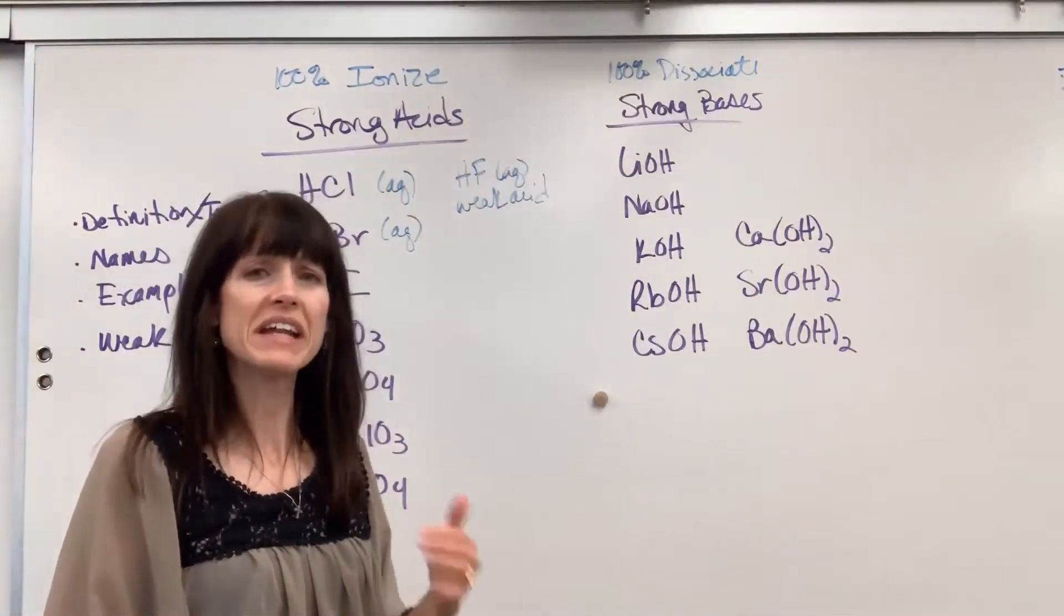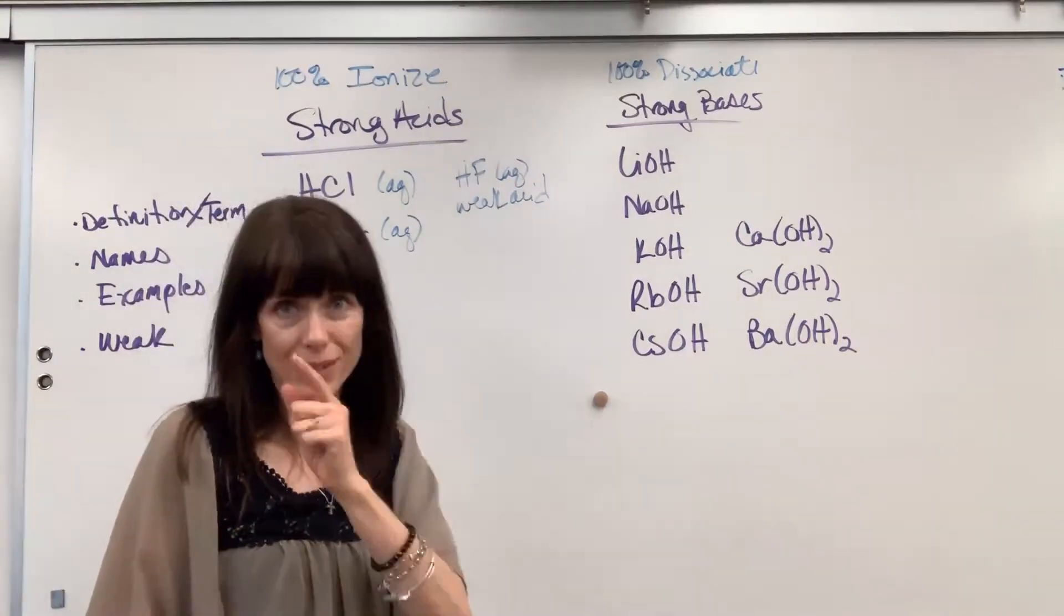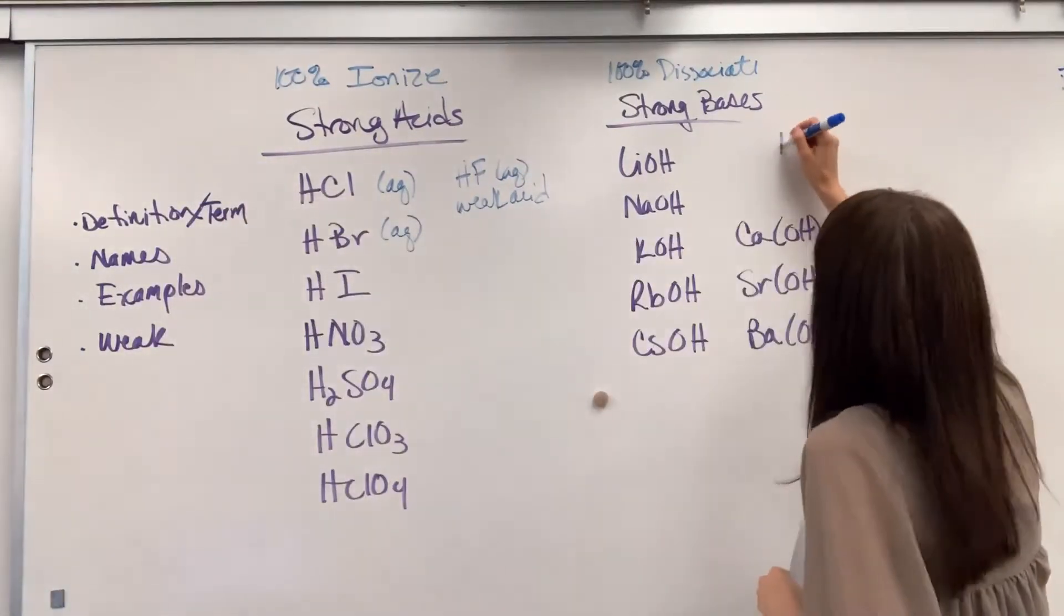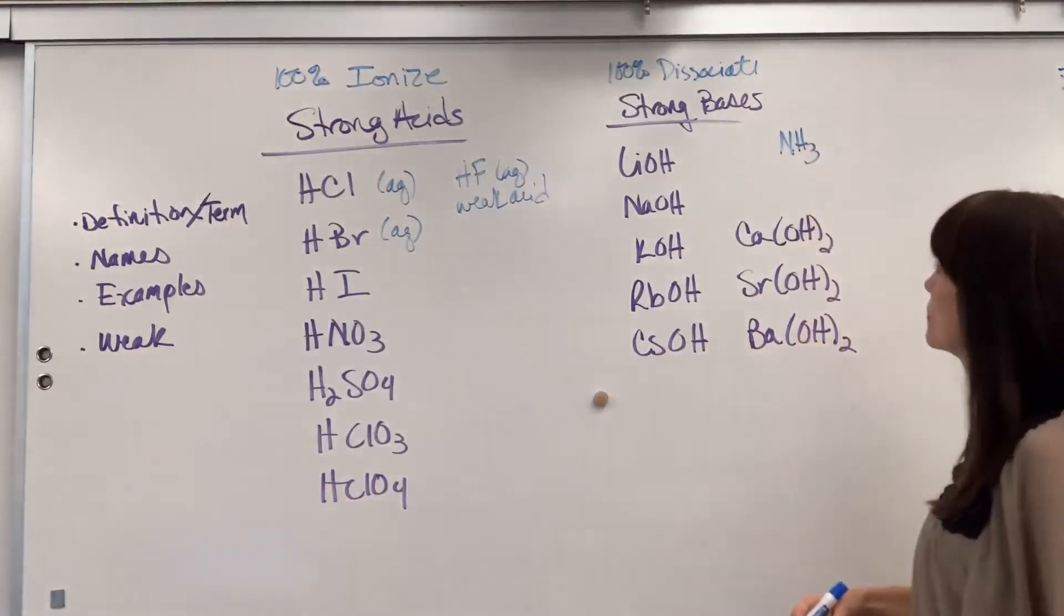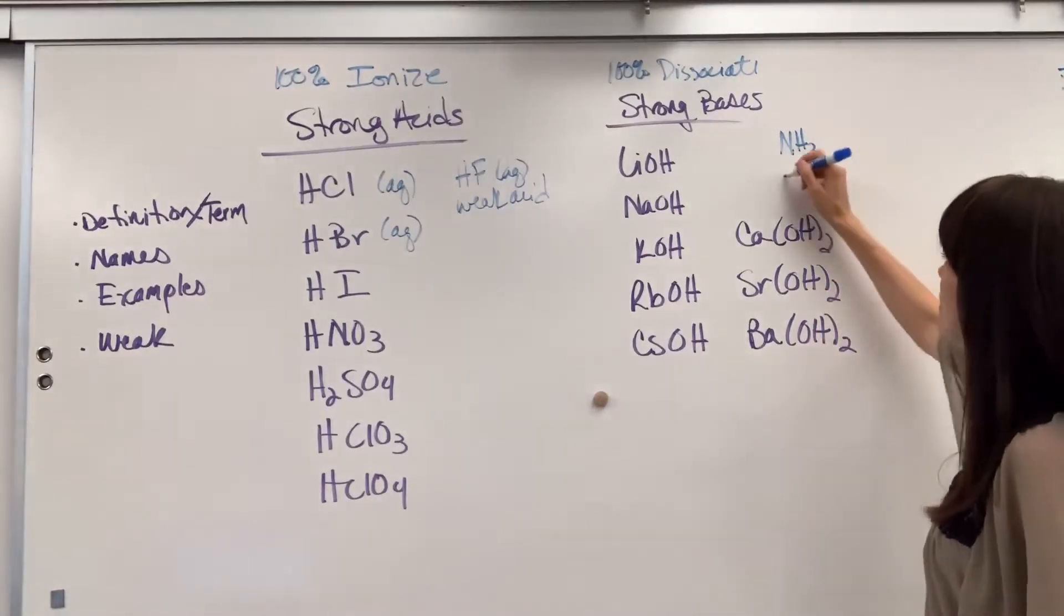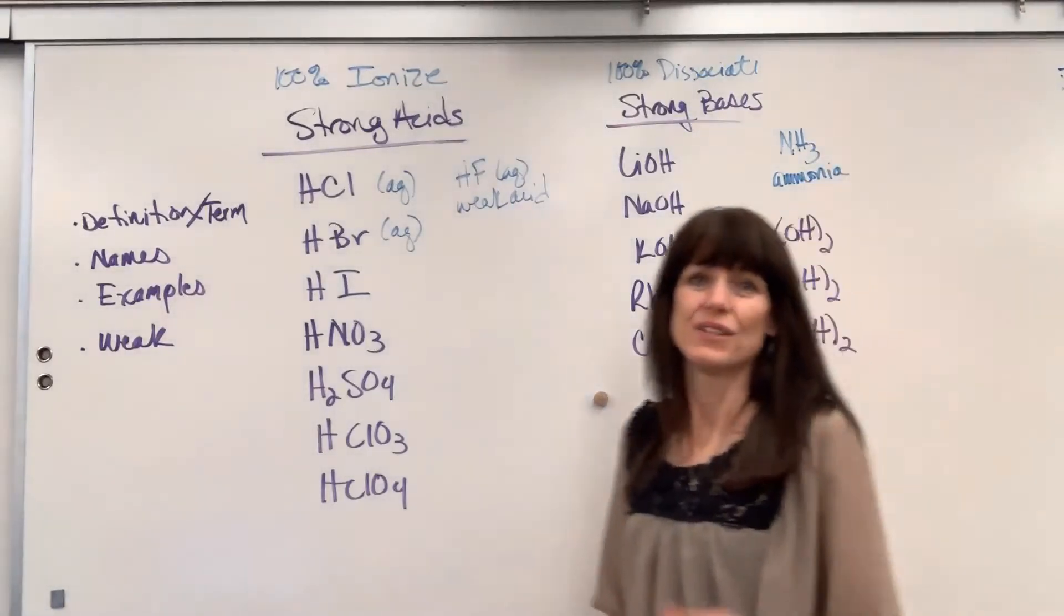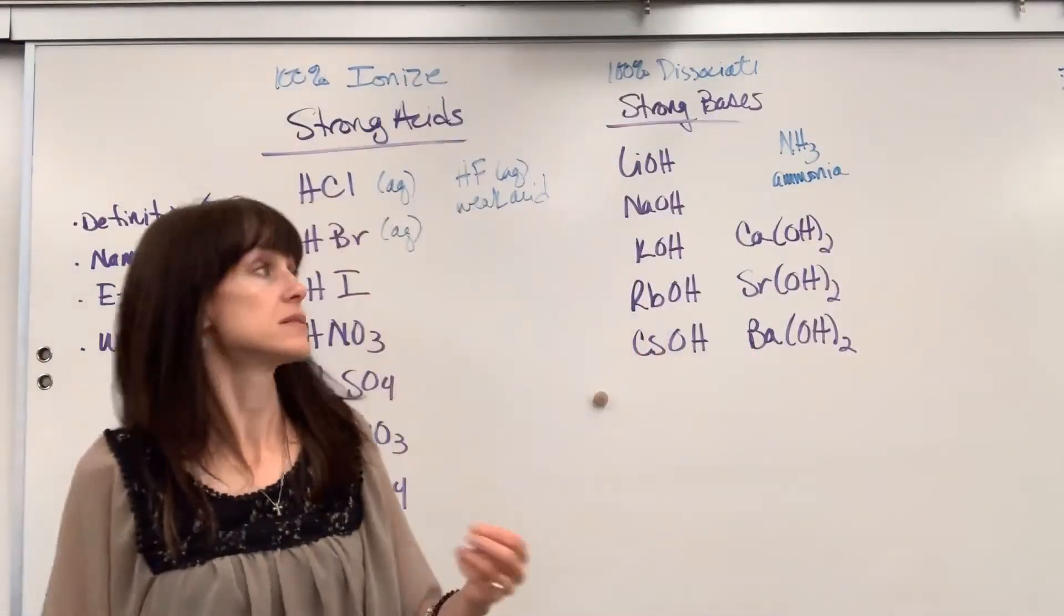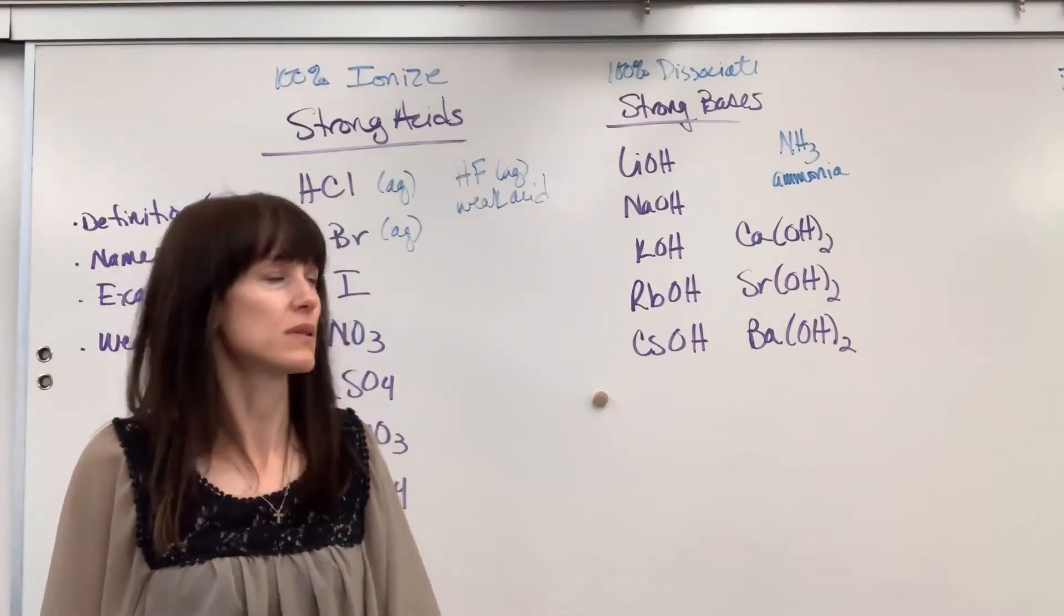If you have any other base, it automatically will be considered weak. Here's an example for you. A very common base that you'll see in a Gen Chem class or AP, IB level class is going to be ammonia. Ammonia NH3. So that is a weak base. It only partially is going to react with the water.